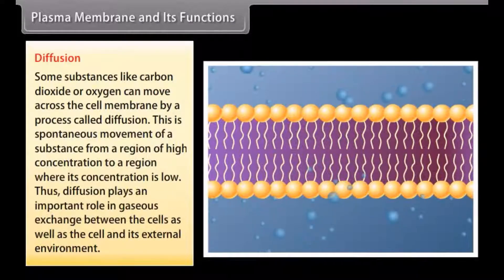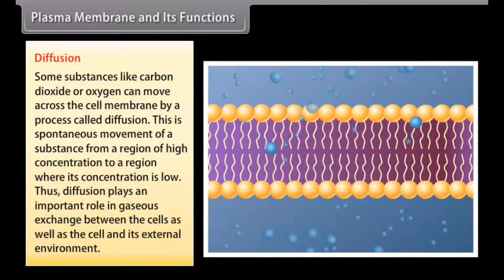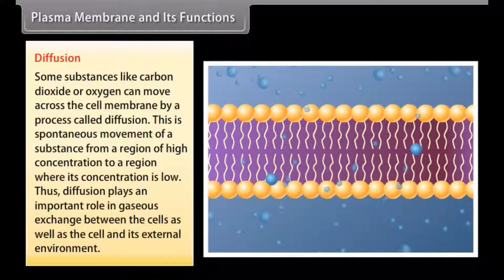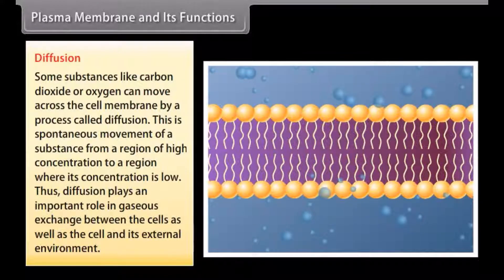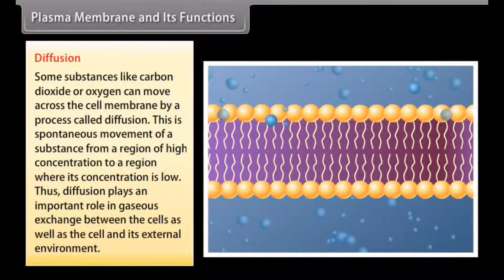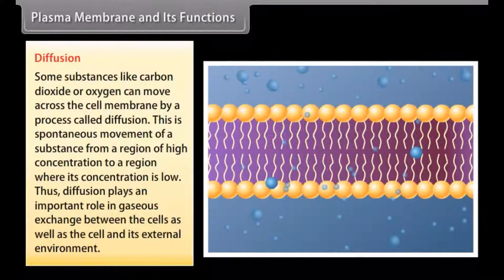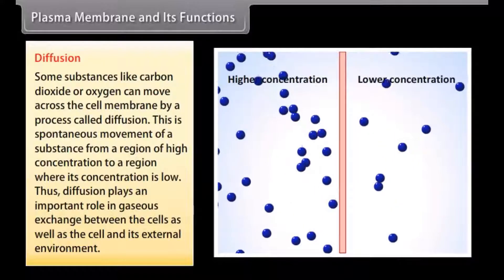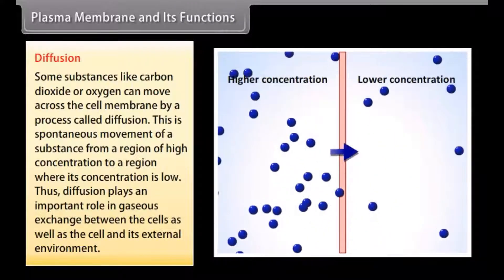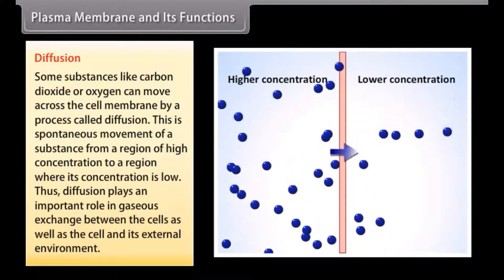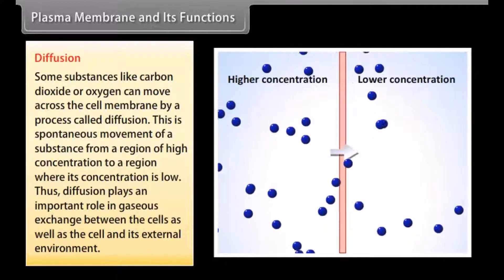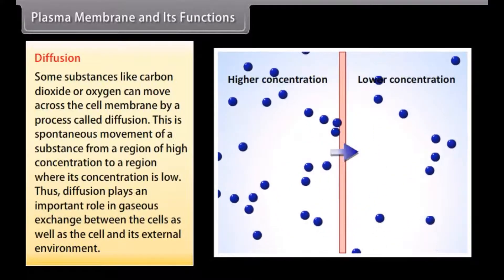Diffusion. Some substances like carbon dioxide or oxygen can move across the cell membrane by a process called diffusion. This is the spontaneous movement of a substance from a region of high concentration to a region where its concentration is low. Diffusion plays an important role in gaseous exchange between cells as well as between the cell and its external environment.